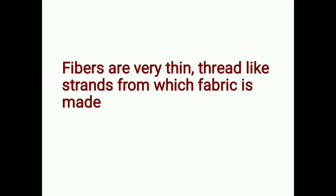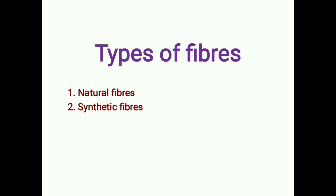These thinner strands of cotton which make up the yarns are called cotton fibers. So now we will discuss about the fibers. Fibers are the thin thread-like strands from which the fabric or cloth is made. The fibers are of two types: one is a natural fiber, and the other one is a synthetic fiber.